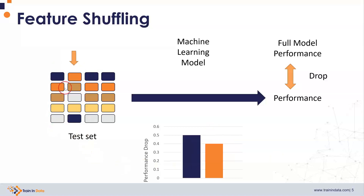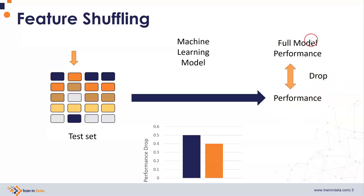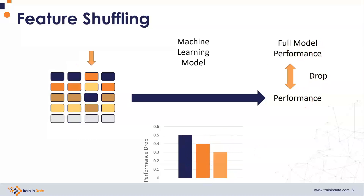Then we take the test set again and we shuffle the second feature. Note that the first feature is now back in the correct order. And utilizing this data set, we obtain the predictions with the same machine learning model. This will return a value of performance. We obtain the difference between the original model performance and the performance after shuffling this feature, and this drop constitutes the importance of the second feature. Then we move on to shuffle the third feature and repeat the procedure.